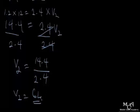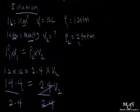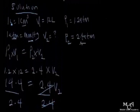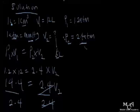When the pressure increased to 2.4 atmosphere, we got a smaller volume of 6 liters. This confirms that as pressure increases, volume decreases, and as pressure decreases, volume increases. This is a good illustration of Boyle's Law: the volume of a fixed mass of gas is inversely proportional to pressure, provided temperature remains constant.